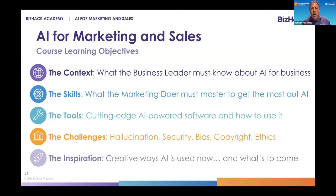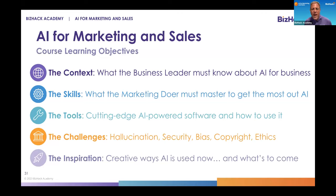We're going to share with you the mainstream software everyone's heard of, like ChatGPT and Stable Diffusion, and other cutting-edge software like Jasper that give you incredible access to tools with a much easier interface. We're going to talk about challenges around hallucination, security, bias, copyright, and ethics. We're also going to give you inspiration with our guests showing how they're using this today to save money and create content that's better than anything they could have done on their own.